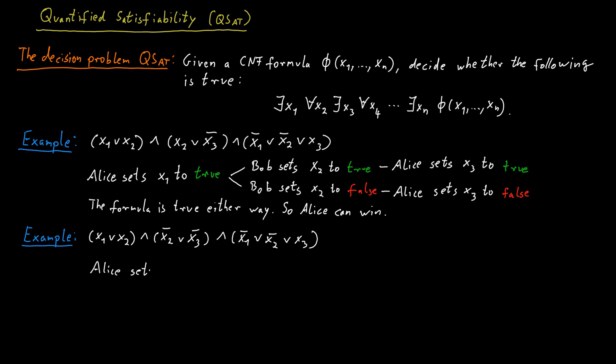So suppose Alice tries to set x1 to false, then what Bob can do is he can set x2 to false as well, which means it will become impossible to satisfy the first clause in this formula, which is x1 or x2. So this would just be false now, there are no further literals in that clause, so it will become impossible to make the formula true. Alice loses the game. So Alice has to set x1 to true.